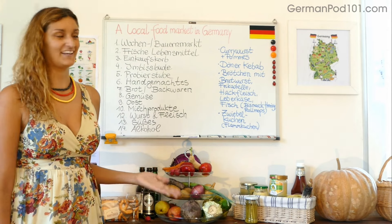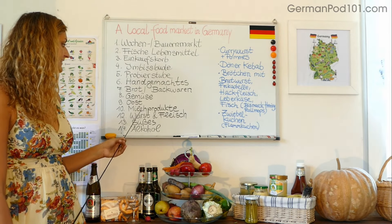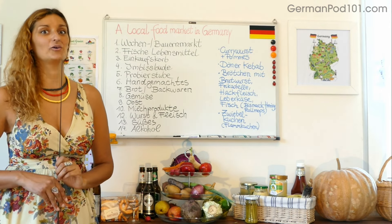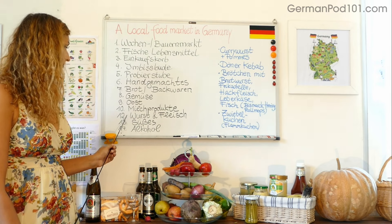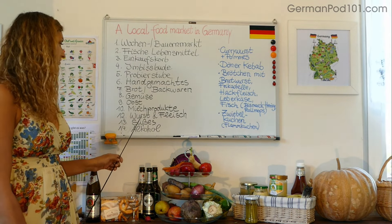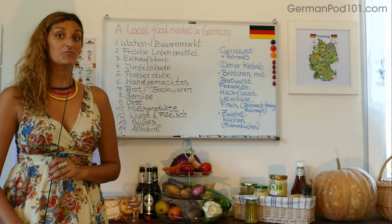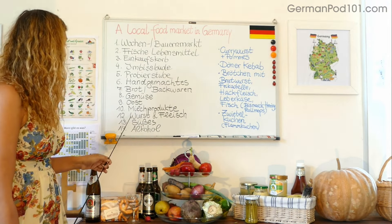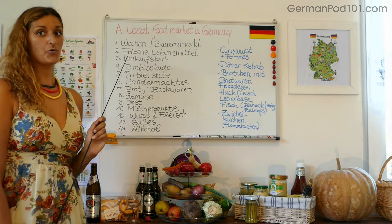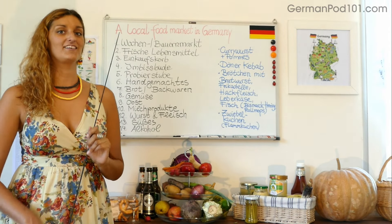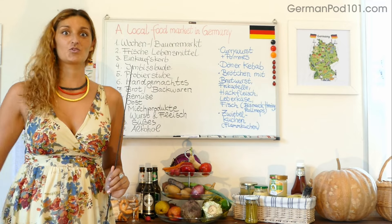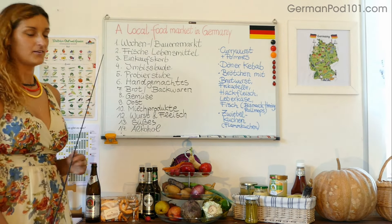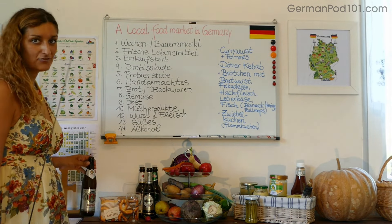Darüber sprechen wir dann später im Detail. Dann die Nummer zehn sind Milchprodukte. Natürlich gehört dazu zum Beispiel Käse — nicht nur die Franzosen essen viel Käse, sondern auch die Deutschen. Dann die Nummer zwölf ist Wurst und Fleisch — sausage and meat. In Deutschland gibt es ungefähr 1500 verschiedene Wurstsorten, die ihr probieren solltet. Dann die Nummer 13 ist Süßes — Sweets. Da sprechen wir ganz besonders von den ganz verschiedenen Kuchensorten, die es in Deutschland gibt, zum Beispiel die Schwarzwälder Kirschtorte oder der Käsekuchen. Die letzte Vokabel ist Alkohol — hier habe ich euch ein paar typische deutsche Bierflaschen mitgebracht.